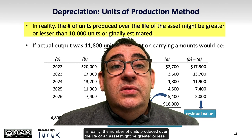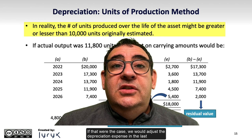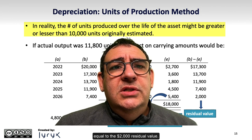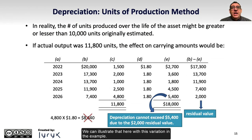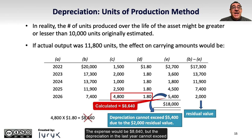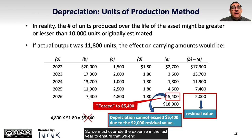In reality, the number of units produced over the life of an asset might be greater or less than the 10,000 units originally estimated. If that were the case, we would adjust the depreciation expense in the last year to ensure we end up with a carrying value equal to the $2,000 residual value. For example, if actual output was 11,800 units based on 2026 actual usage of 4,800 units, the calculated expense would be $8,640, but the depreciation in the last year cannot exceed $5,400 — otherwise we would end up with a carrying value below the residual value. So we must override the expense in the last year to ensure the carrying value equals the residual value of $2,000.